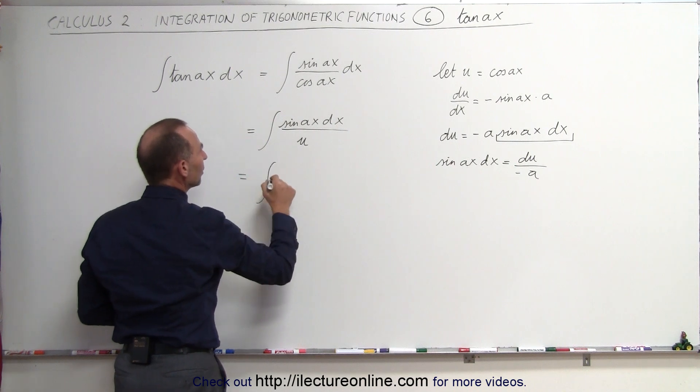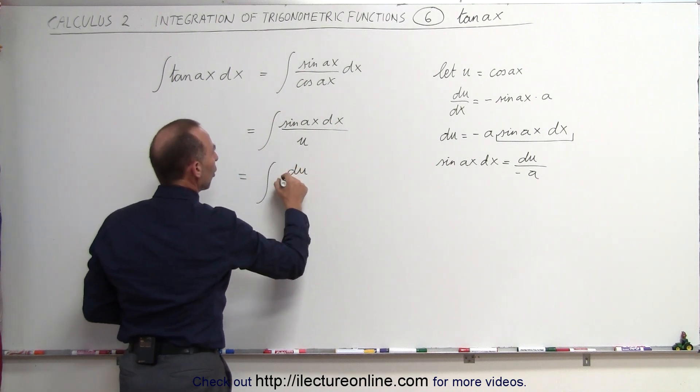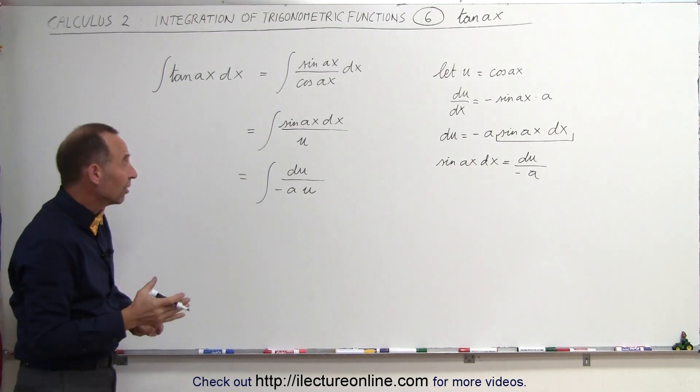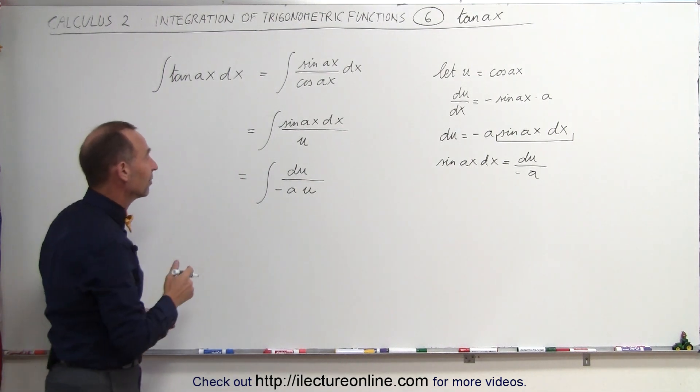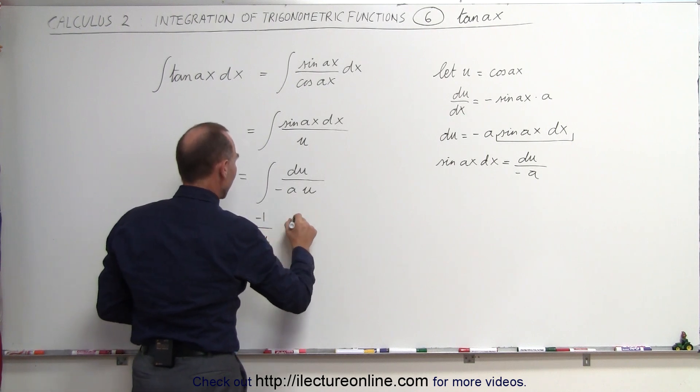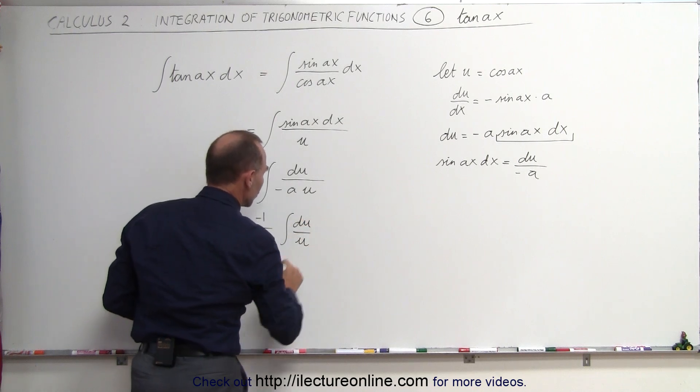This can now be written as the integral of du over minus A times u. And since A is a constant, we can move that outside the integral sign. This can now be written as minus 1 over A times the integral of du over u.